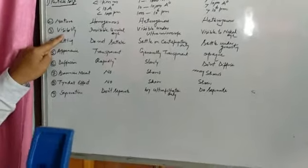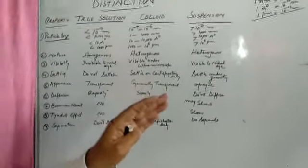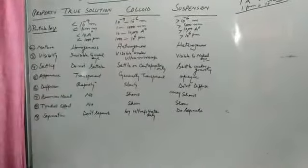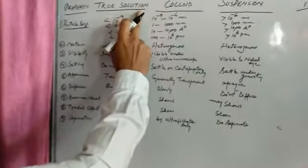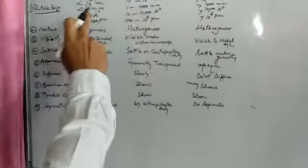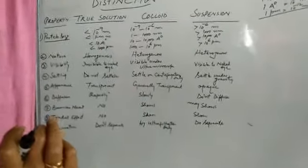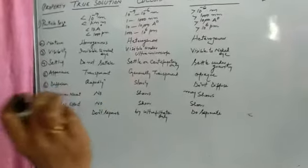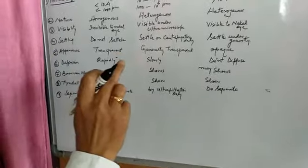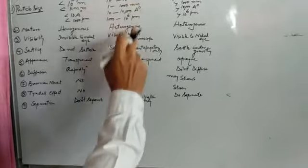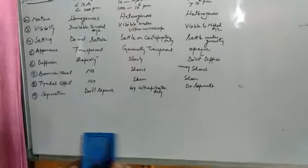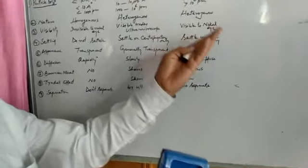Coming to another property: visibility — whether the particles of these mixtures are visible, and if so, whether they are visible with naked eyes or by means of a microscope. The particles of true solutions are invisible to the naked eye since their particle size is less than 10⁻⁹ meter. Colloid particles can be seen, but only using a high-power microscope known as an ultra microscope. Suspension particles, since their size is very large, can be seen with the naked eye and even with an ordinary microscope.